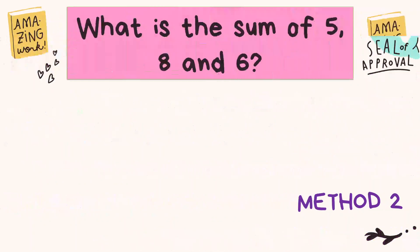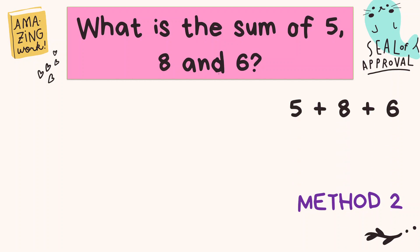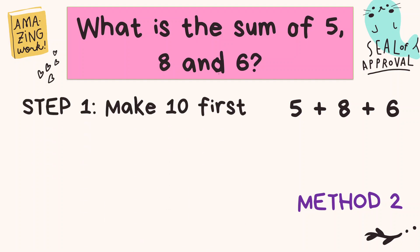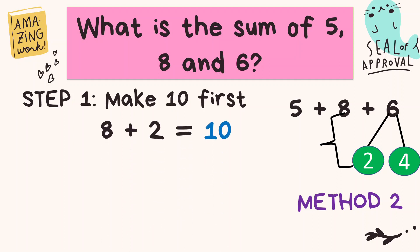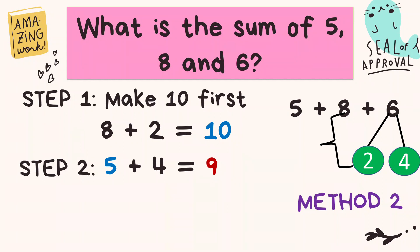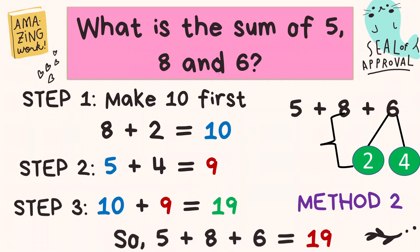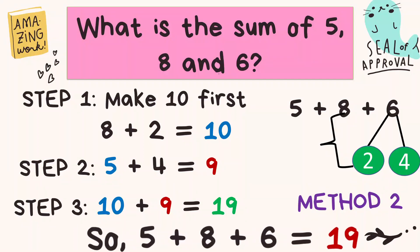Now I will show you Method Two. Same question — the addends are five, eight, and six. A while ago we used number eight. So what's the first step? Make ten first. Now let's try to use six. We're going to break six into two and four. Two and four is equal to six. Then we will combine eight and two, because eight and two is equal to ten. The second step is to combine five and four, which is nine. The third step is to add the total of step one and step two: ten plus nine is nineteen. We got the same answer with Method One and Method Two!